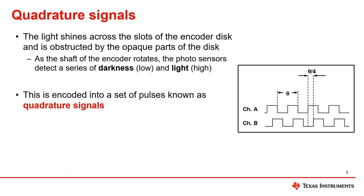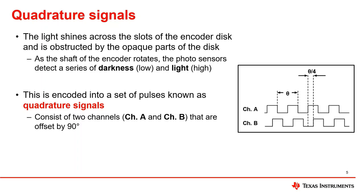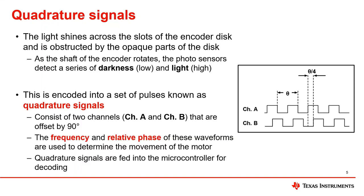This waveform pattern is known as quadrature signals and they encode the rotational information of the quadrature encoder, as shown to the right. Quadrature signals consist of a pair of channels A and B that are offset by 90 degrees. Depending on the device, the channels may also be referred to as phase inputs or QEP inputs. The frequency and relative phase of these waveforms with respect to each other can be decoded into position, direction, and speed information when input into a microcontroller.